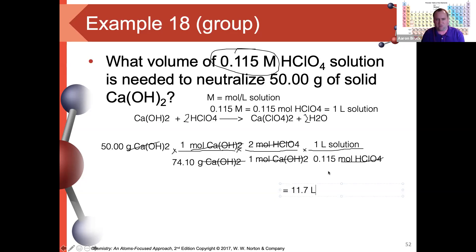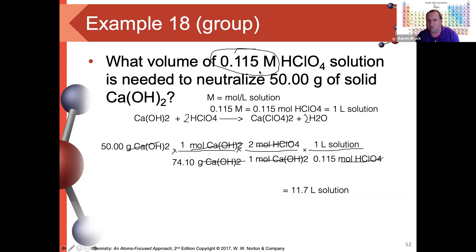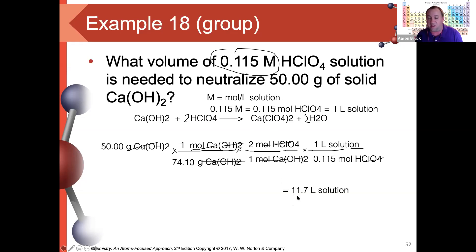Confirming: 50 times 2 divided by 74.1, divided by 0.115 — 11.7 liters of solution. It sounds like a lot, but considering how dilute this solution is and how much 50 grams of solid calcium hydroxide is, that makes sense. If you were doing this practically, you'd pick something more concentrated — maybe 2 or 3 molar — so it might only take 500 mL instead.